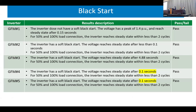Based on that preparation, we moved to the first test: black start, one of the most important grid-forming functions. Using the same protocol for all five inverters, all five grid-forming inverters passed the black start — they can reach full voltage within less than 0.1 Hz, around six cycles. However, grid-forming one does not have the soft black start that the other inverters have. We fed this back to the vendor and they plan to improve their black start capability.